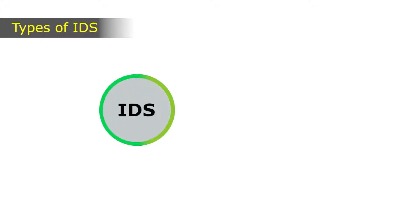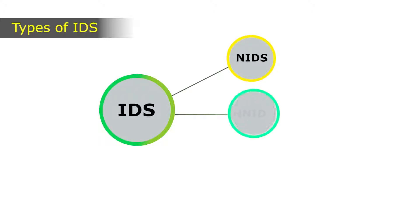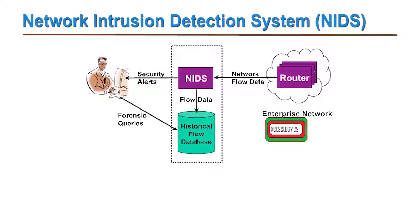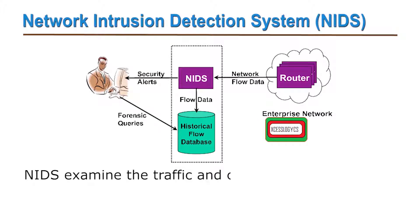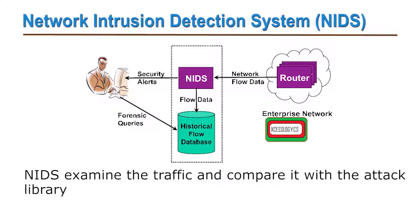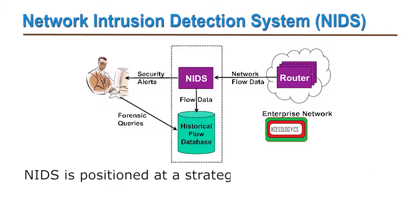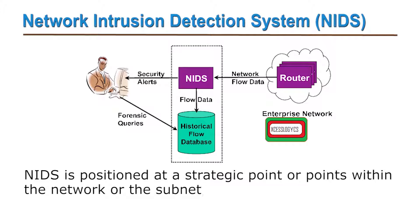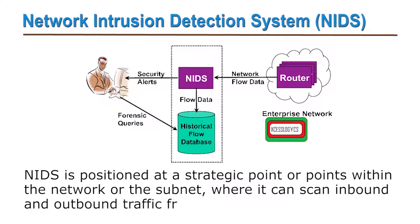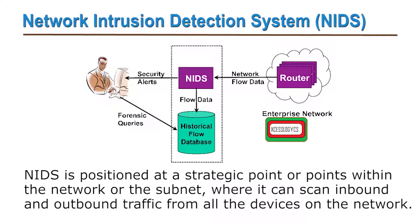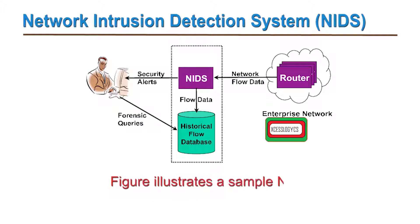IDS can be basically classified into three types based on its level of operation: network IDS, network node IDS, and host IDS. NIDS, or network IDS, examines the traffic and compares it with the attack library. NIDS is positioned at a strategic point within the network or subnet where it can scan the inbound and outbound traffic from all devices on the network. We can see this with the help of a sample NIDS shown in the figure.